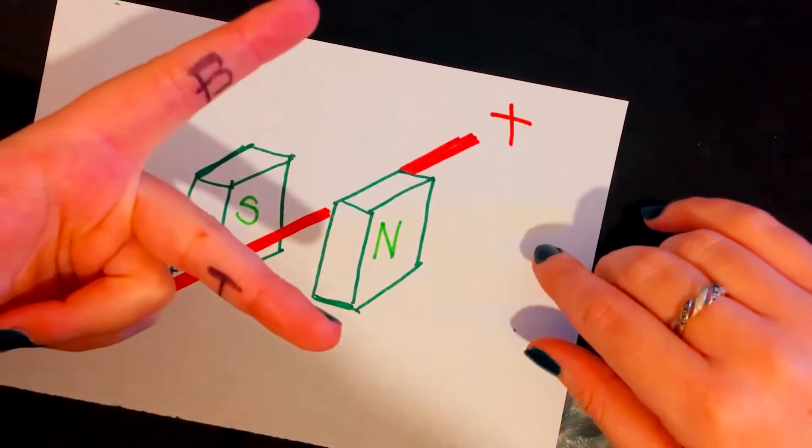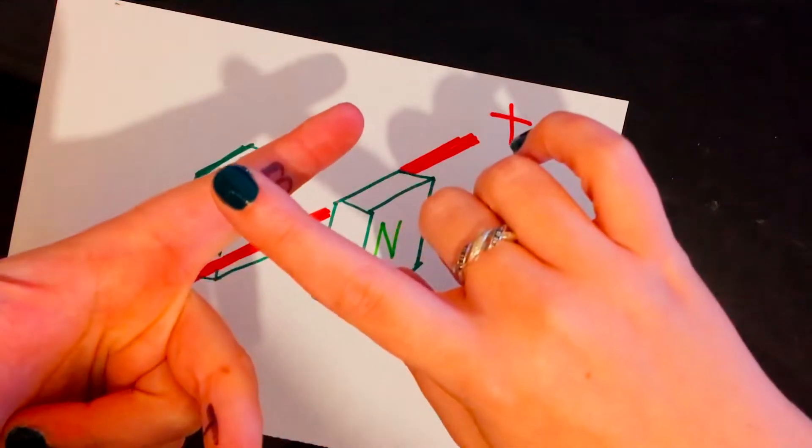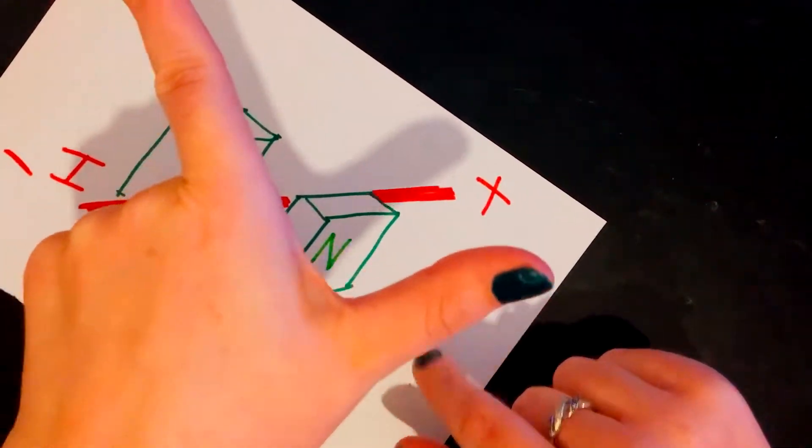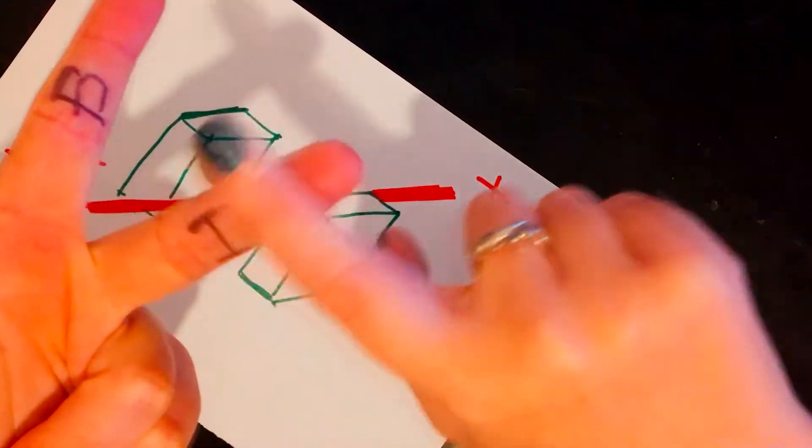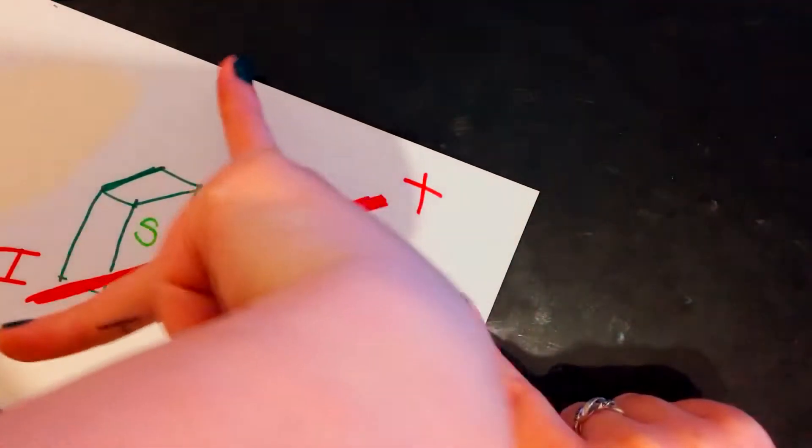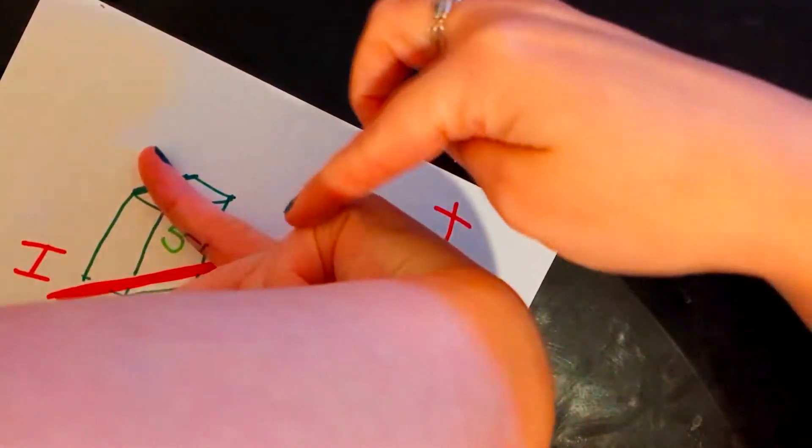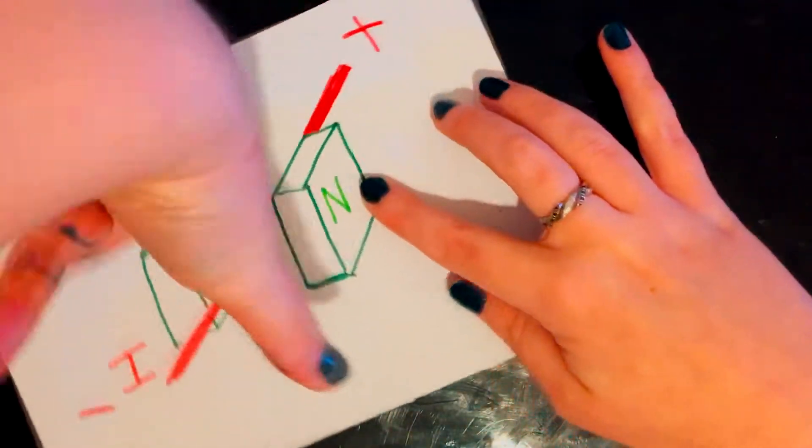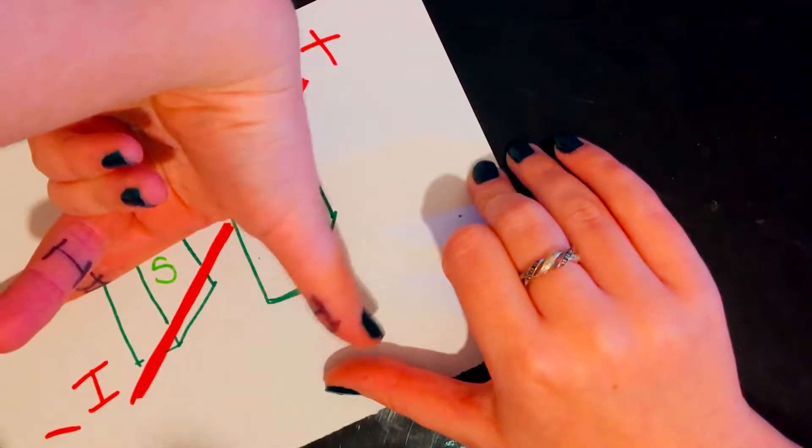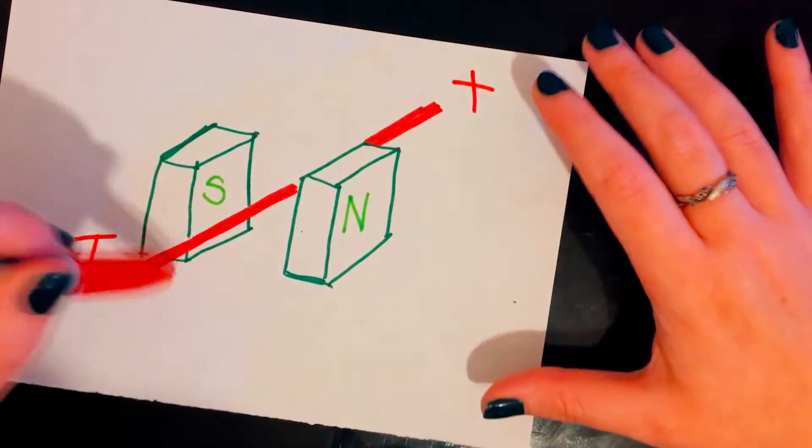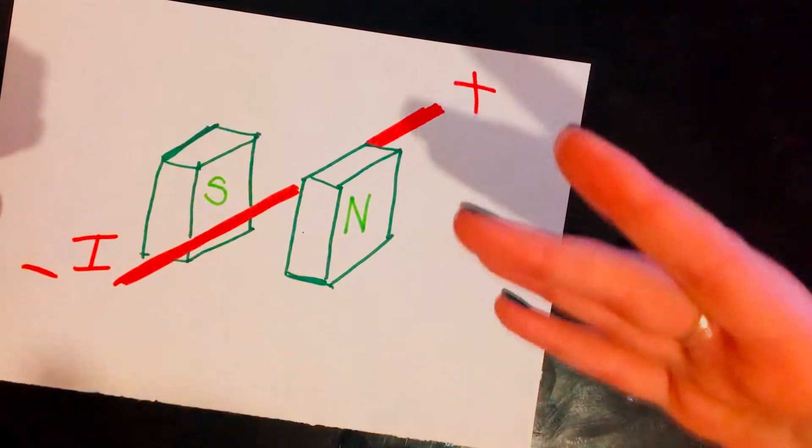Looking at our FBI again, my field is going this way, from north to south. My current is now coming out of the page, going from positive to negative. So my current is going this way. My field's going this way, my current's going this way. Well look, my force is still going in a downward direction. This is really hard to show on camera, but it's going in a downward direction. So if you switch more than one component, it is going to make the same outcome.